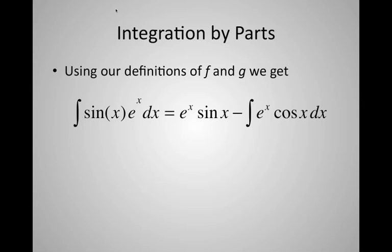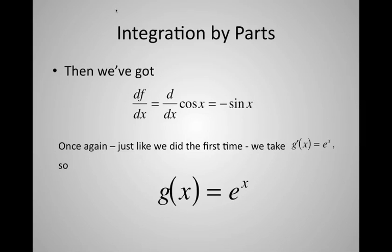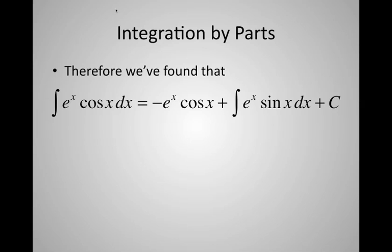It seems like we're not getting anywhere, but actually we are, because we apply integration by parts again on the second integral on the right. Take f(x) to be cos(x). The derivative of cos(x) gives minus sin(x). Again take g' = eˣ, so g(x) = eˣ. The integral of eˣ·cos(x) dx using integration by parts is eˣ·cos(x) minus eˣ·sin(x)... wait — it equals eˣ·cos(x) minus (minus eˣ·sin(x)), giving eˣ·cos(x) plus eˣ·sin(x).